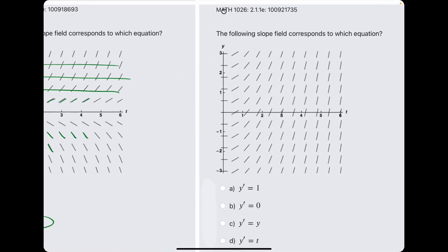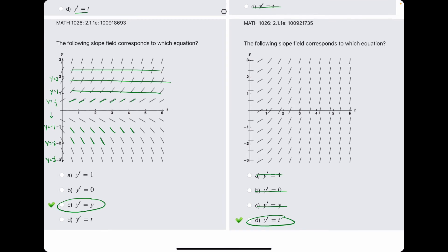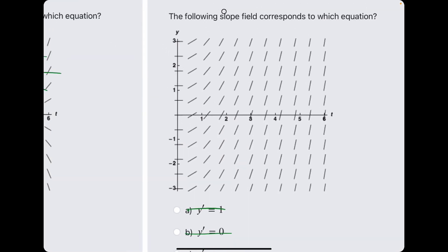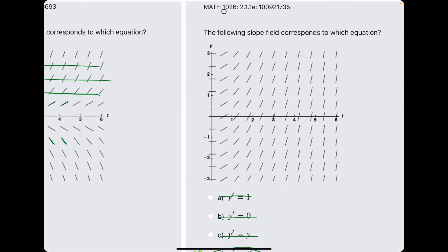And at this point, we've gone through all the other options, and so that just leaves d. Let's see if we can go through an explanation of why it's y prime equal to t. So kind of the same argument as this, but in a way, the opposite.